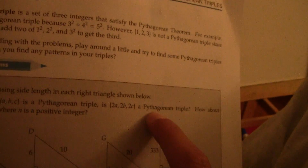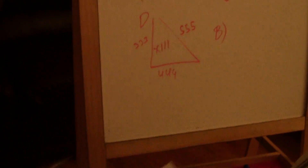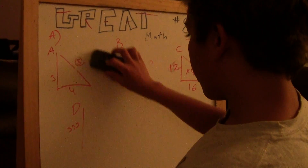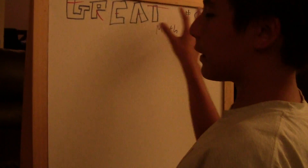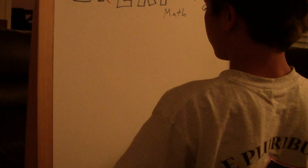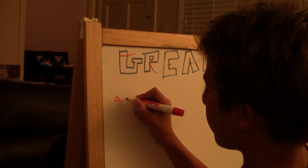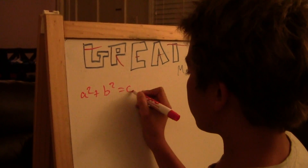Did you explain what Pythagorean triples are? I'm getting there. So this is the same thing multiplied by two. This is something we call Pythagorean triples. Basically, Pythagorean triples means it's still a right triangle even if you multiply each side by a certain number — you get pretty much the same results without having to redo the Pythagorean theorem.